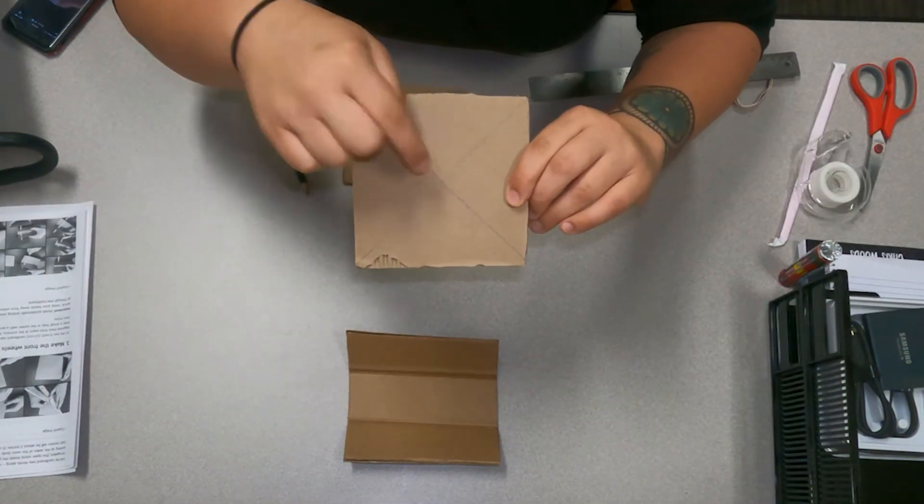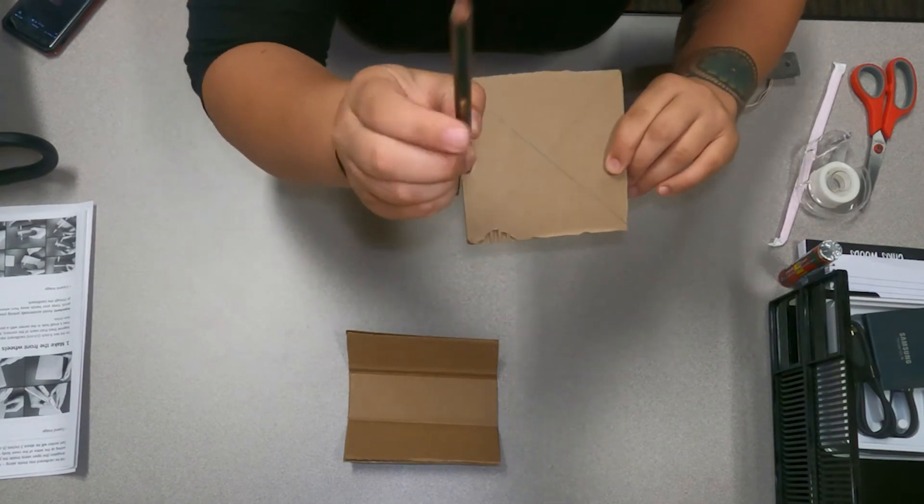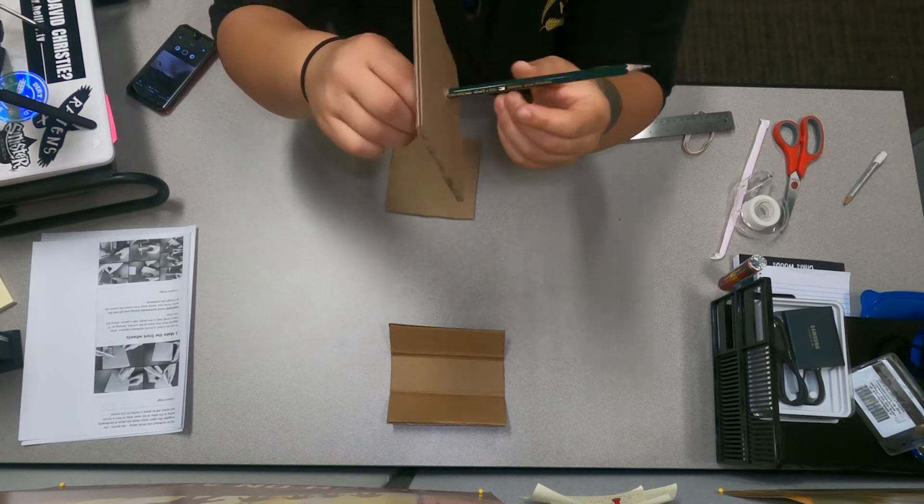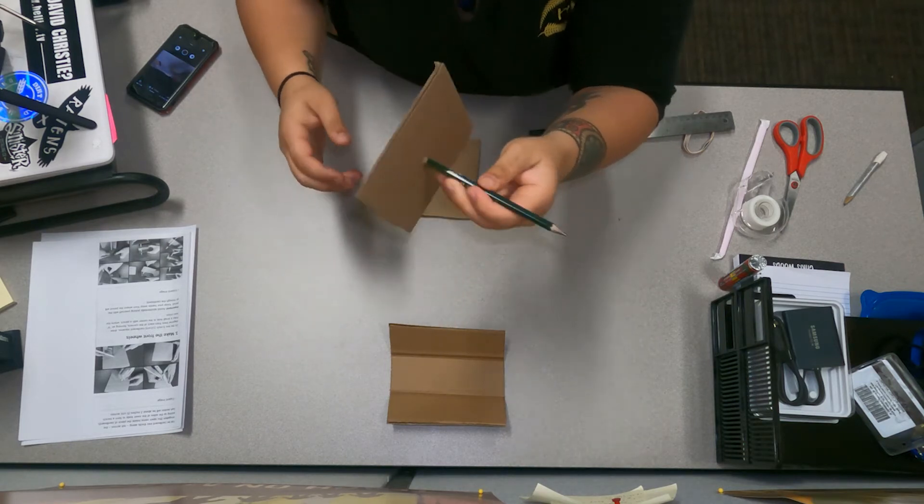So you will have those two lines that'll make a perfect point in the middle and you're going to take your pencil and you're going to drive it right through the middle like that so your cardboard is stuck to the end of your pencil.